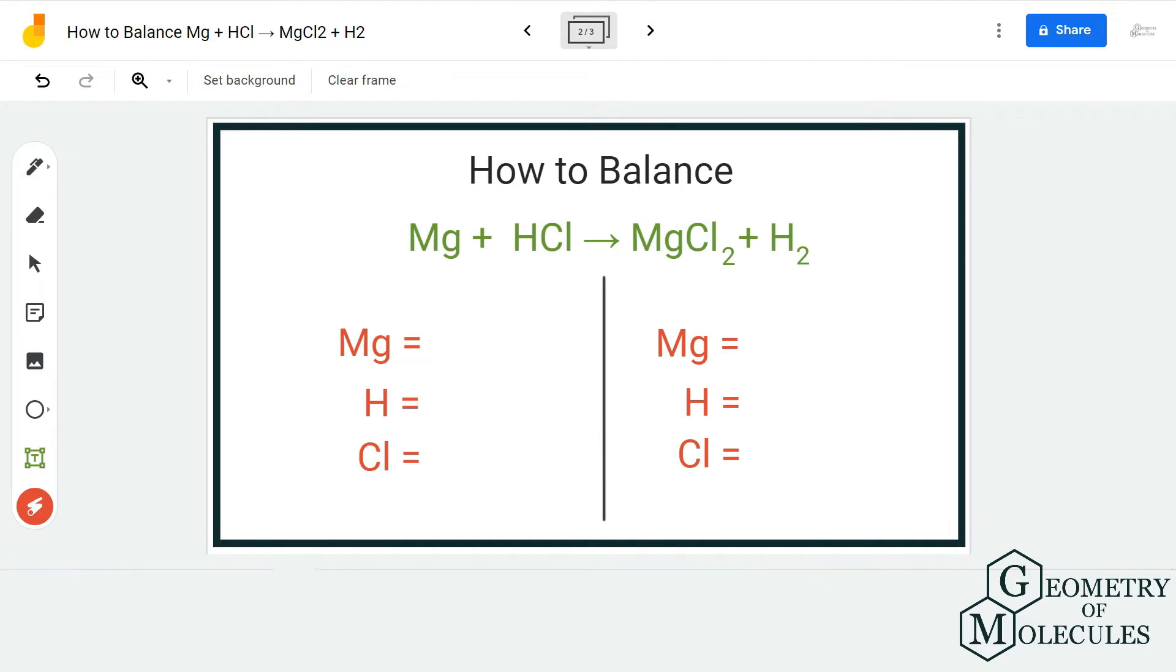To balance this equation, I'm first going to count the number of atoms on both reactant and product sides. On the reactant side, I have one magnesium atom, one hydrogen atom, and one chlorine atom. On the product side, I have one magnesium atom, two hydrogen atoms, and two chlorine atoms. So it is visible that the equation is not balanced.